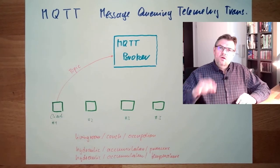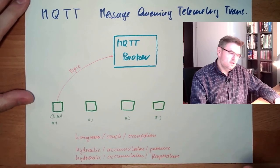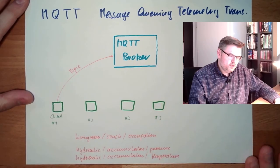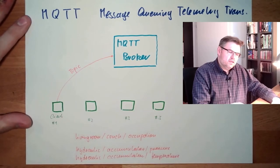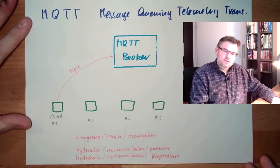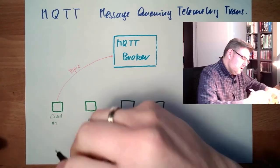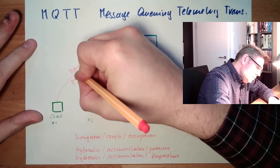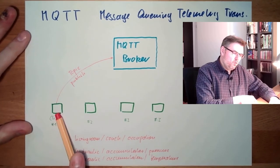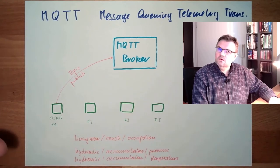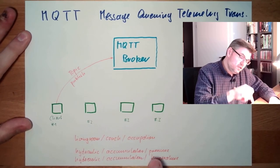A client might tell the MQTT broker to retain a topic — there is a retain flag. The MQTT broker always stores the full information content of all published topics. One topic can be published not only by one client but by several clients. It's not bound to one client — any permitted client can publish that topic.